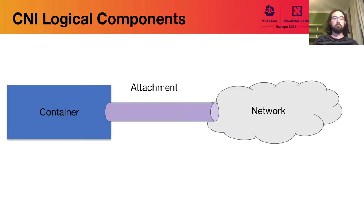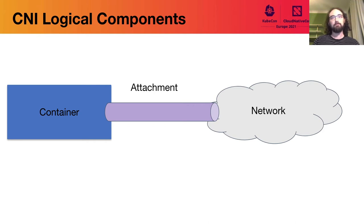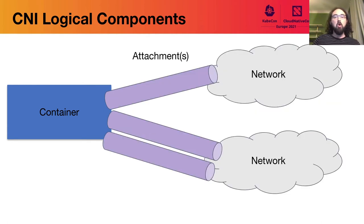Let's talk briefly about the abstract or logical components of the CNI model. On the left we have a container which is managed outside of CNI. CNI is only one aspect of bringing a container up and makes no commentary on how a container itself is managed — that is supposed to be handled by a container runtime engine. Then there is a network, which in the CNI world is represented by a single CNI configuration file. And then you have an attachment of a container to a network — this is CNI's picture of the world.